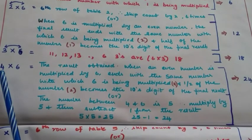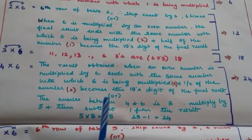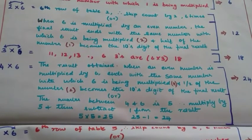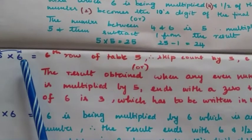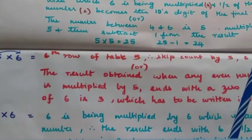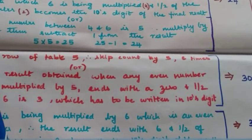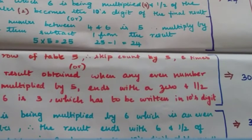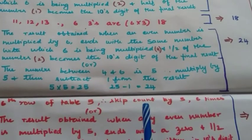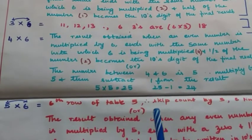Or you can use another trick: since there is only one number between 4 and 6, which is 5, multiply 5 by 5 to get 25 and subtract 1 to obtain 24. For row 5, since we have already learnt table 5, you can skip count by 5 six times to get 30. Or use the trick where 5 multiplied by an even number ends with 0, and half of 6 which is 3 becomes the tens digit. So the first 5 rows of table 6 were already learnt when you studied tables 1 to 5.